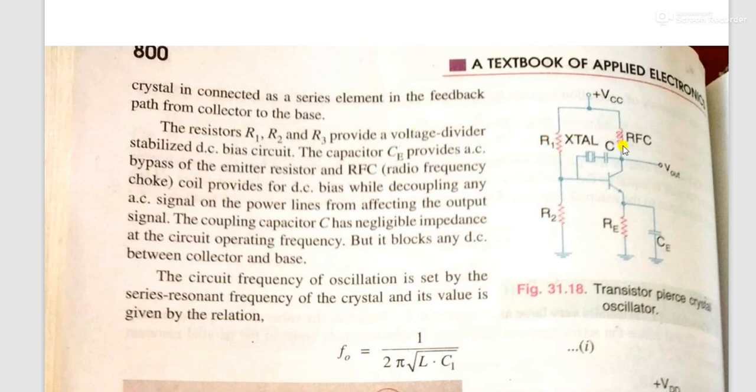The crystal is connected as a series element in the feedback path. That is, between the collector, where we are taking the output voltage, and the base, where we apply the input. So between the base and collector of the transistor, we put the crystal in series with this capacitor.